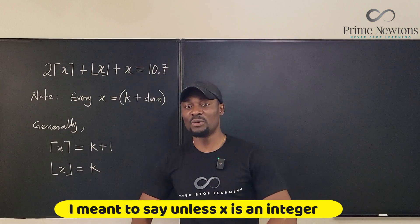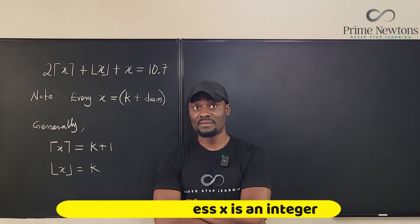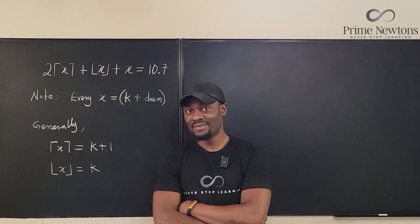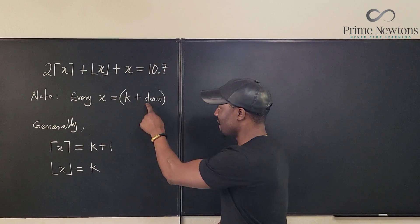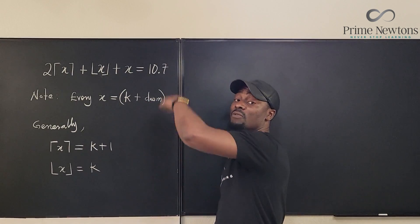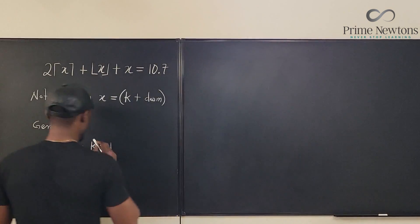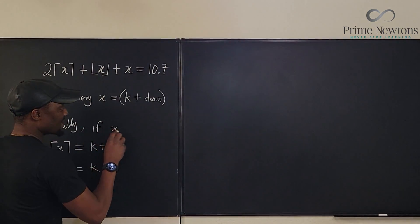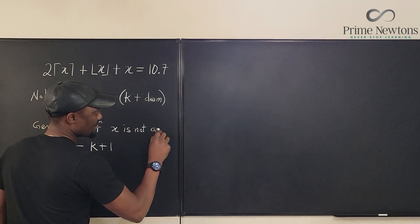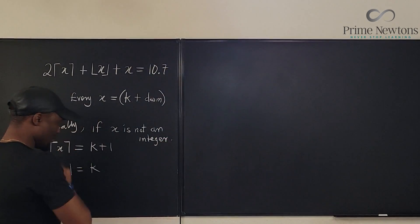For example, the number 7 - the ceiling of 7 is 7, the floor of 7 is 7. So the decimal part has to exist, it cannot be 0 for it to be rounded up. So we're saying generally, if X is not an integer, then this is always true.